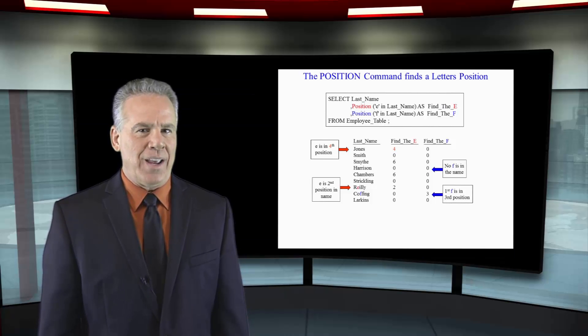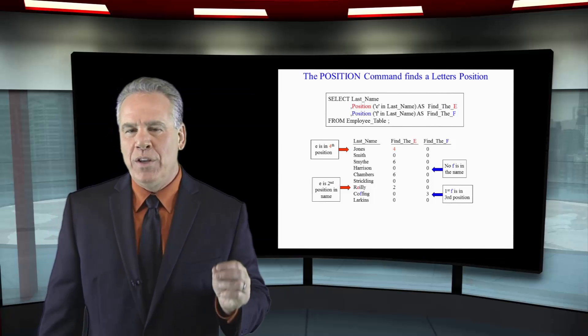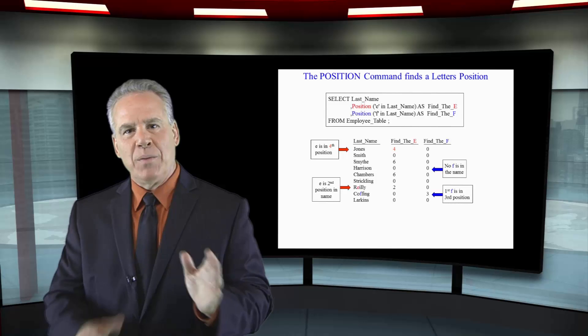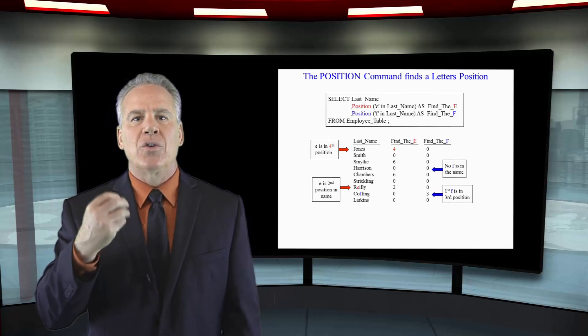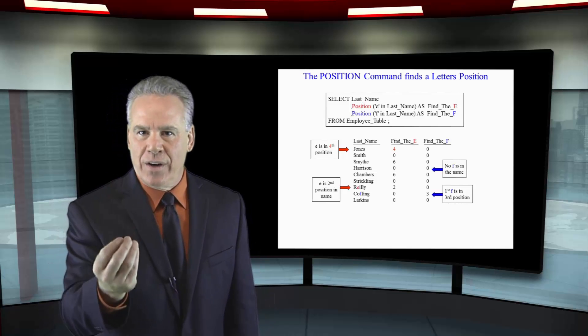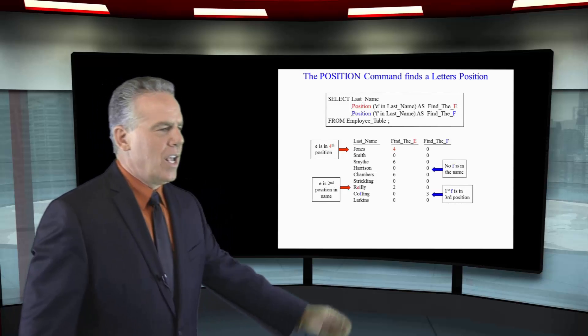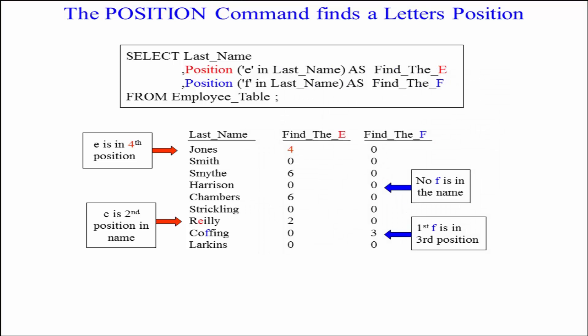The POSITION command is used to find the position in a character string of a certain character or letter. For example, let's select the last name, then position the E in last name, and we'll position the F in last name — so we're really going to look for the E's and the F's.